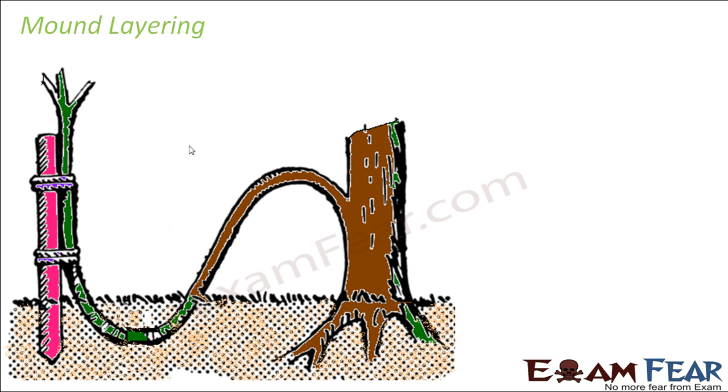Looking at this picture, can you guess what is mound layering? This is your parent plant. You just took a stem of this plant and you forcibly put it under the soil. When you forcibly put it under the soil and cover it with soil.